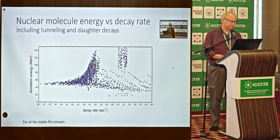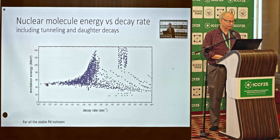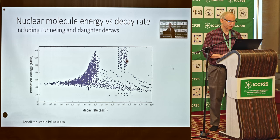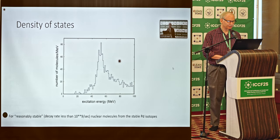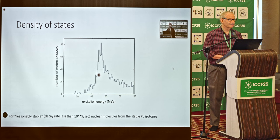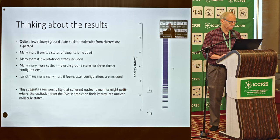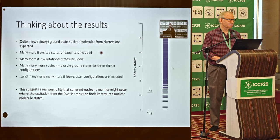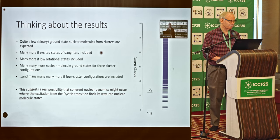The energies are high — MeV and higher. The tunneling rates range all over the place, from years to nanoseconds on this side. The nuclei themselves are beta unstable. The density of states of binary nuclear molecules looks something like this. This model overestimates the excitation energy — this could shift down by 5 MeV with no problem — and it also overestimates the decay rate, so things are actually more stable than the plot. There are actually quite a few binary ground state nuclear clusters. If we added excited states, longer-lived ones, there'd be many more. If we added low rotational states and even vibrational states, even more.